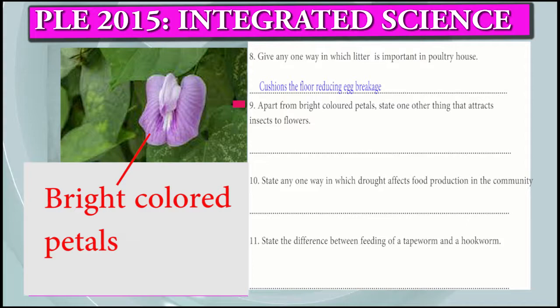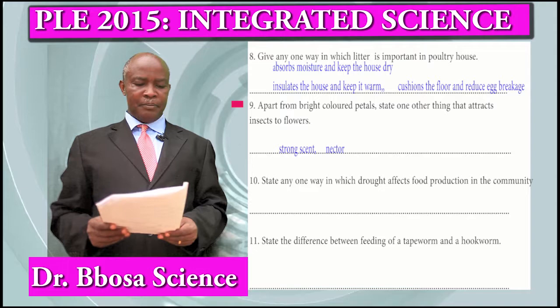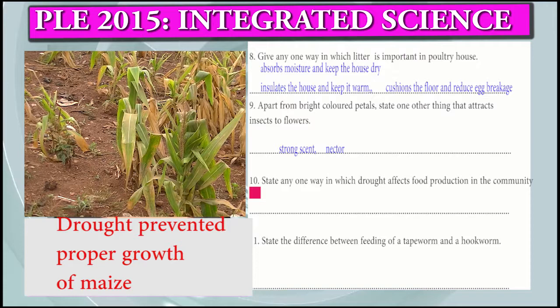Question 9: Apart from bright colored petals, state one other thing that attracts insects to a flower. Strong scent or nectar.